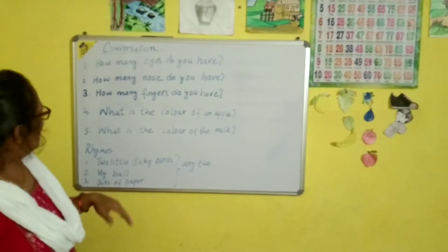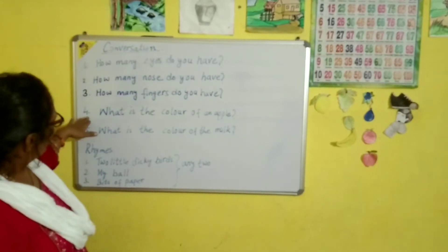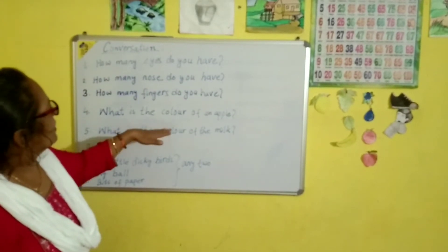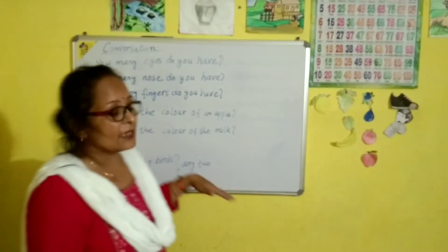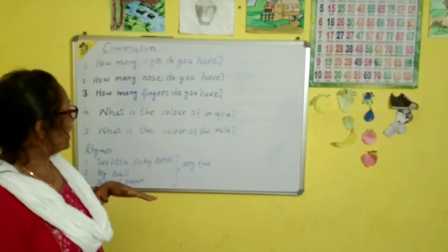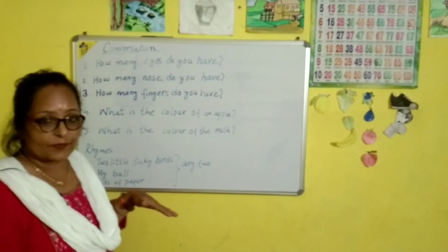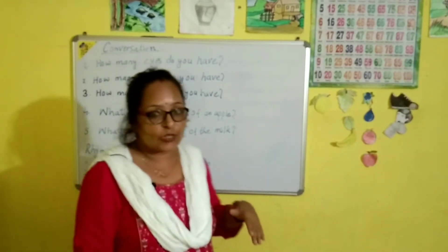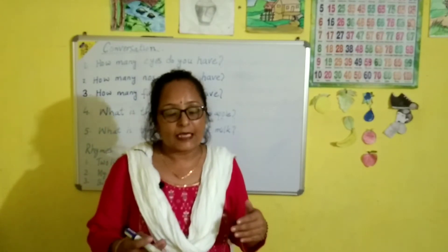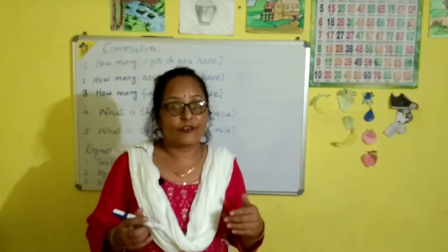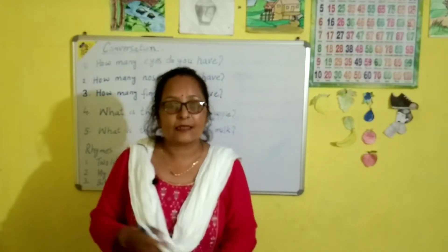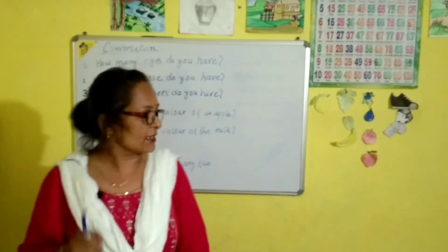And now number four: What is the color of an apple? Have you ever noticed the color of an apple? It is red. Say — the apple is red.